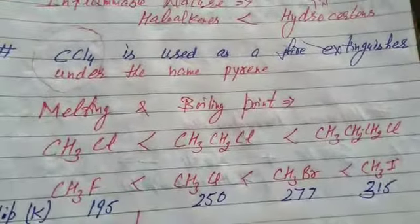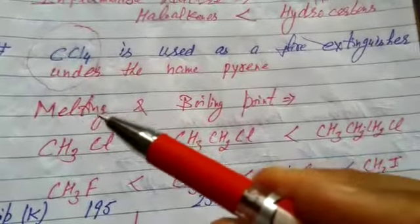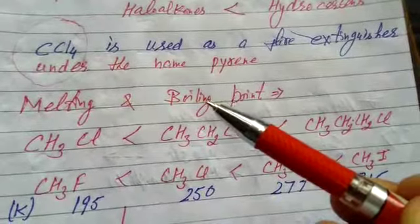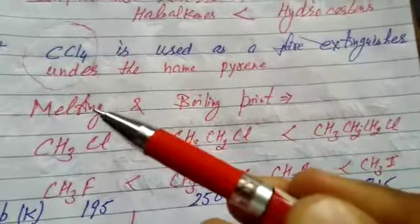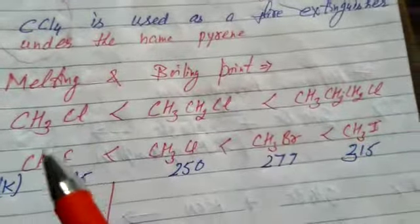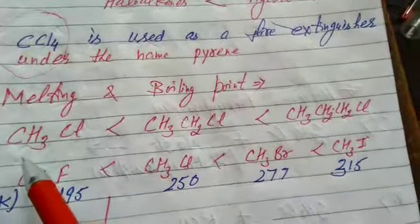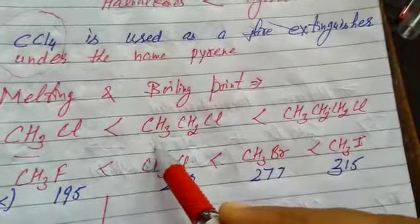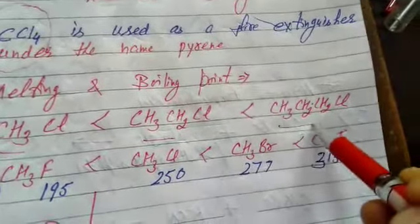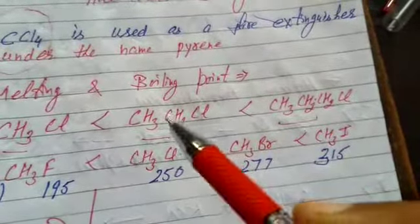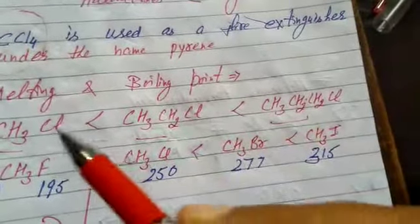Next, melting and boiling point. So it is clear, melting point means compound in solid state and boiling point means compound in liquid. Liquid will boil and solid will melt. Now the question is, melting and boiling point of haloalkanes increase with the length of carbon chain.